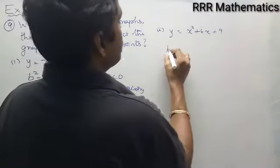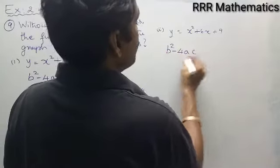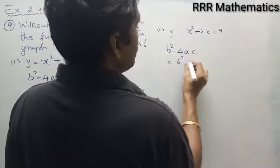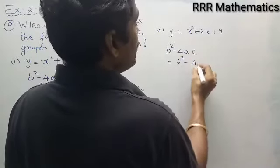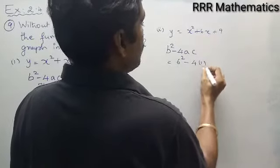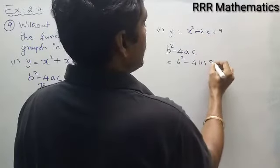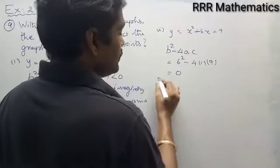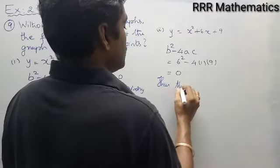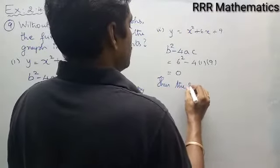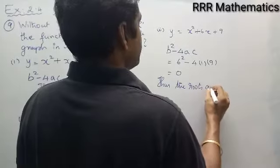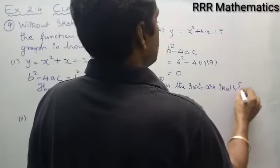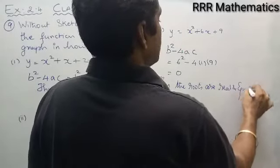Here, the discriminant value b² - 4ac: b is 6, so 6² minus 4 times a (coefficient of x², which is 1) times c (which is 9). This gives 36 minus 36, which equals 0. So in this case, the roots are real and equal.